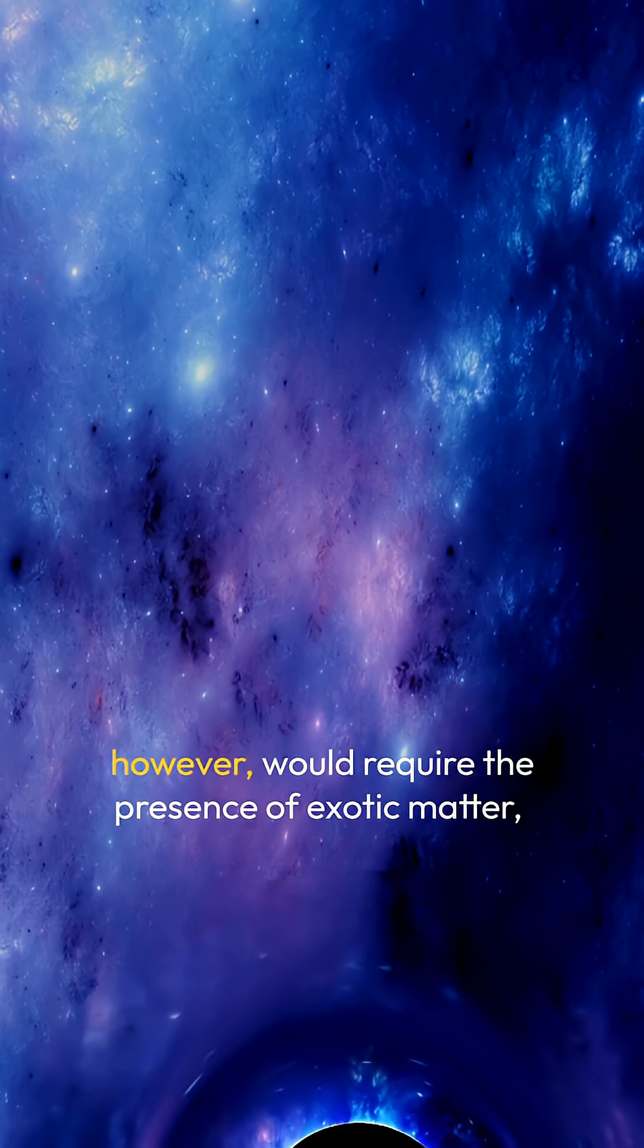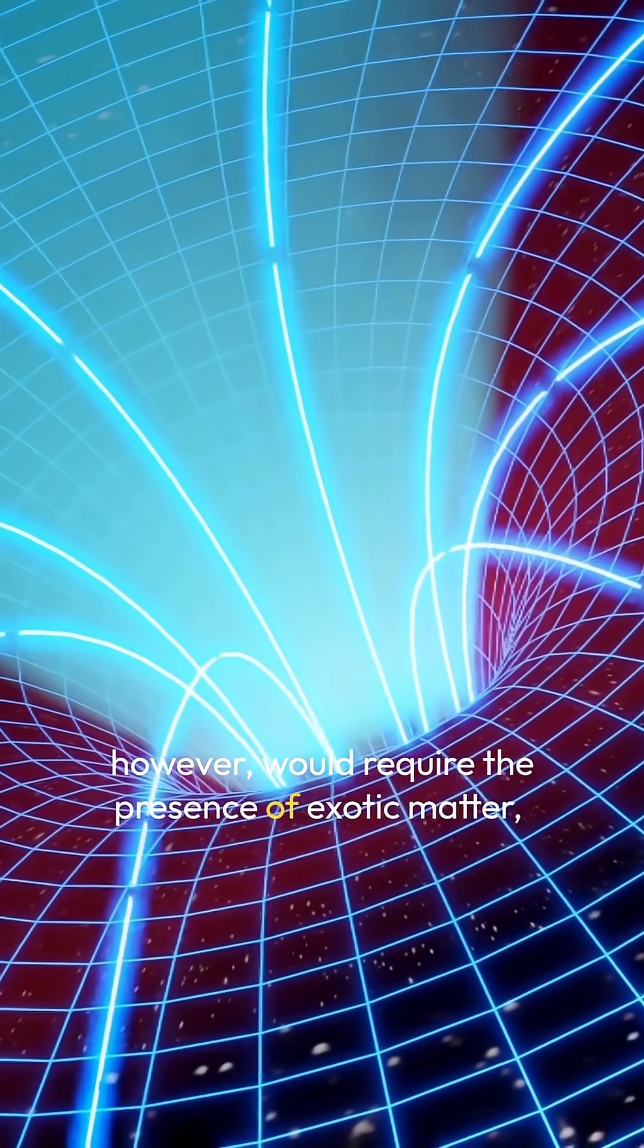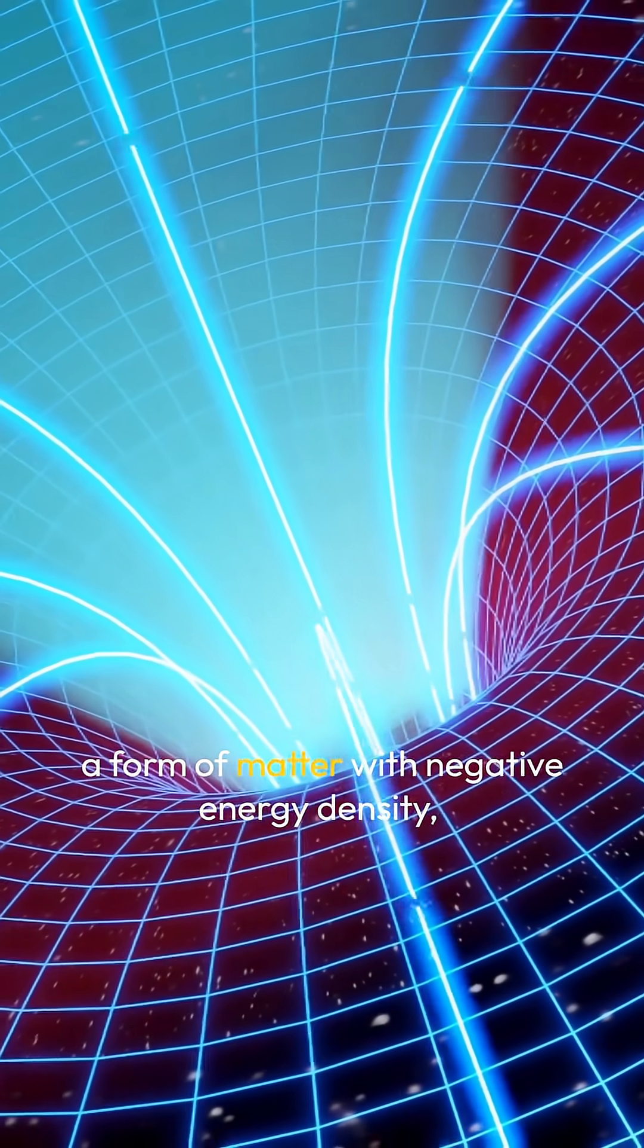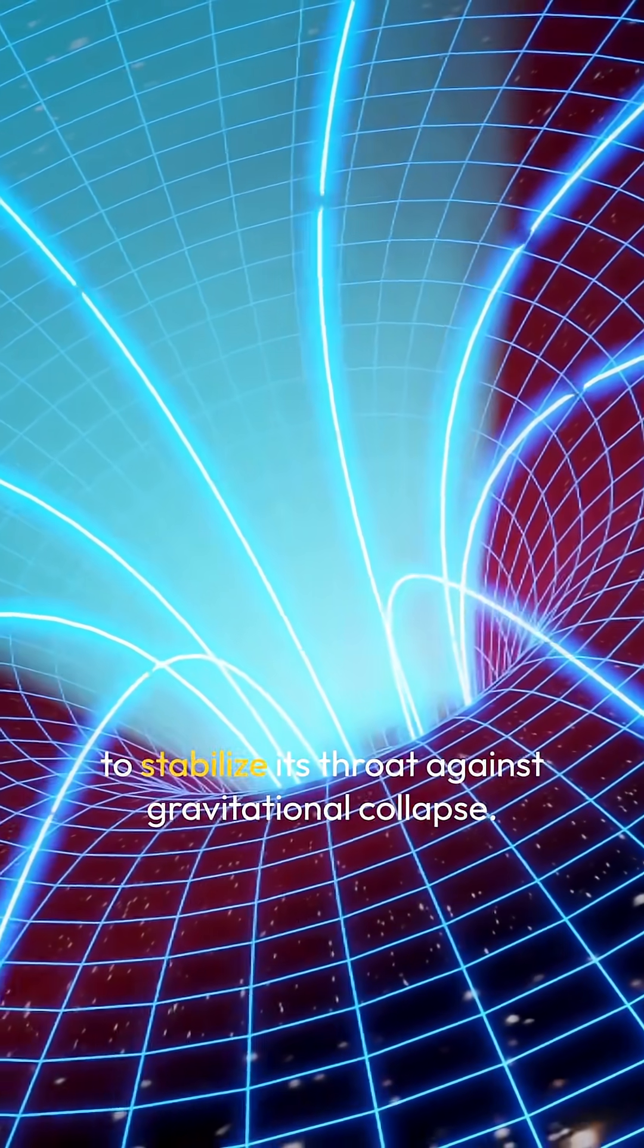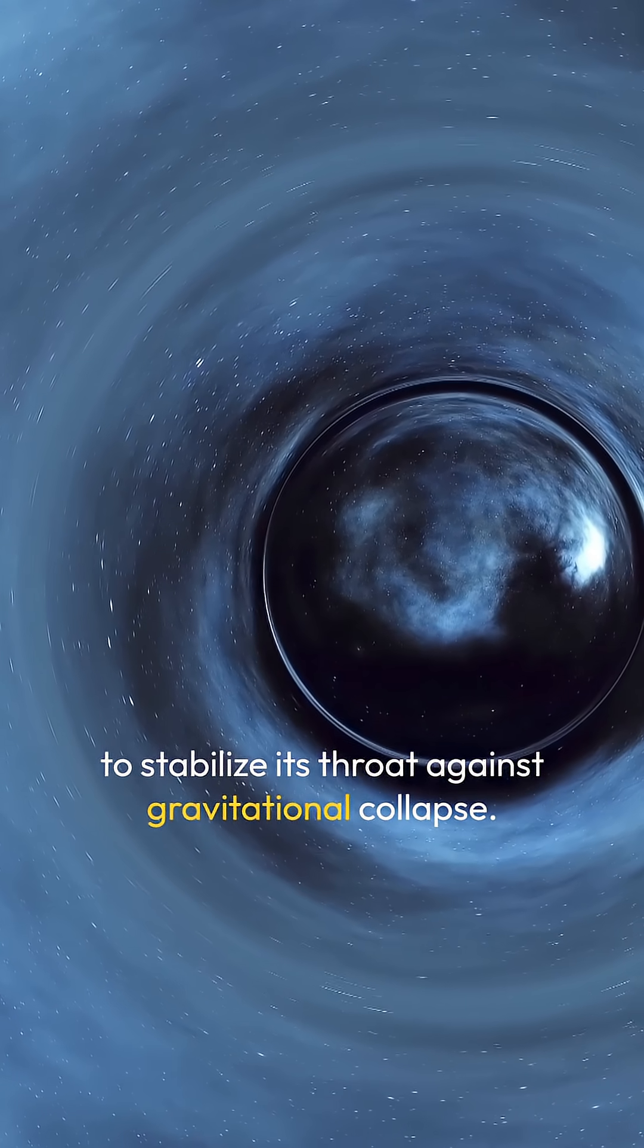A traversable wormhole, however, would require the presence of exotic matter, a form of matter with negative energy density, to stabilize its throat against gravitational collapse.